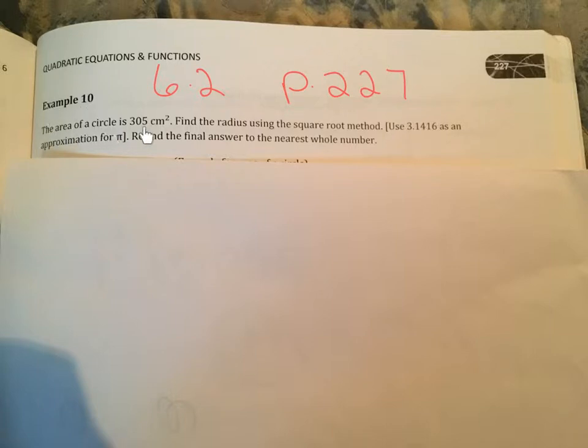Example 10, the area of a circle is 305 square centimeters. Find the radius using the square root method. Use 3.1416 as an approximation for pi. Round the final answer to the nearest whole number.